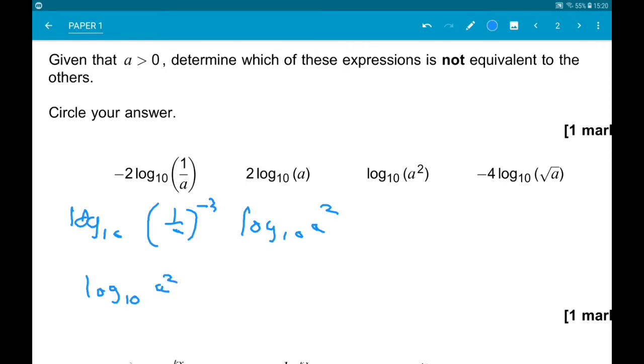So, it's the fourth option. Minus 4 log₁₀ root a would be log₁₀ of a to the half, minus 4, which would become log₁₀ 1 over a squared.